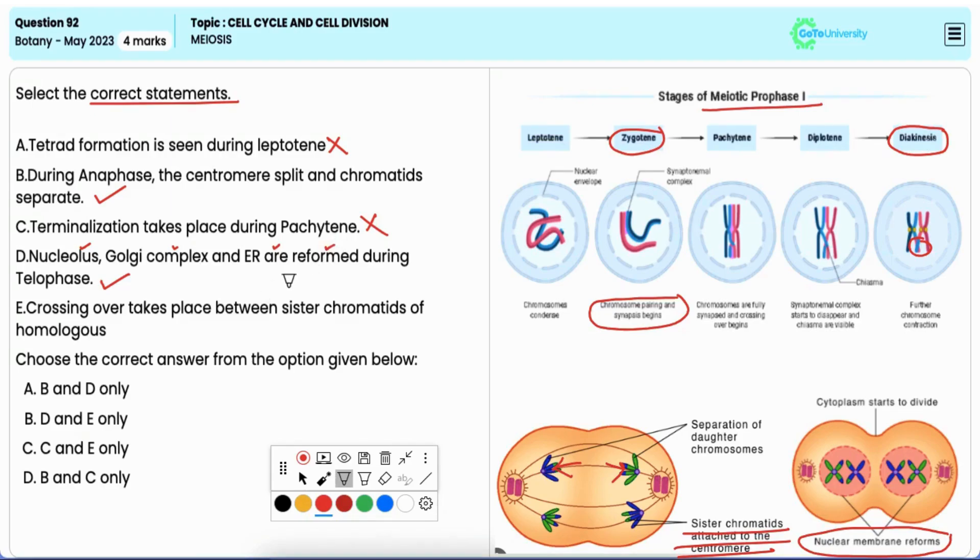Statement E: crossing over takes place between sister chromatids of homologous chromosomes. It is incorrect. Crossing over occurs between non-sister chromatids of homologous chromosomes, not between sister chromatids. Hence the correct answer is option A. Options B, C, and D are incorrect.